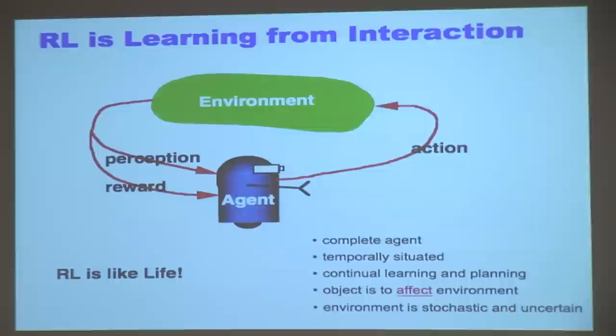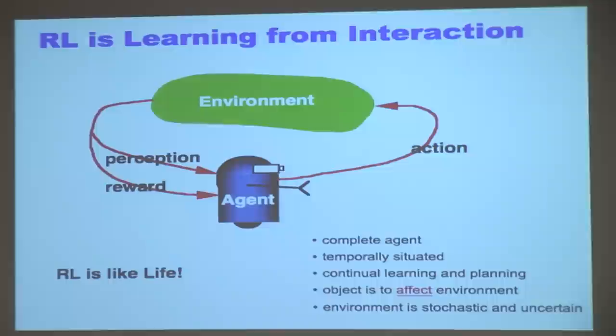Here is the obligatory single diagram of an agent interacting in an environment. You have a robot-like agent in a closed-loop interaction with the environment. It's sensing the environment — perception, observation — and acting in the world, getting some feedback from the world, which is the reward signal. The agent is temporarily situated, acting in time, continually learning and planning. Its objective is to affect the environment, to get into desired situations, to get more reward. And the environment can be stochastic and uncertain.